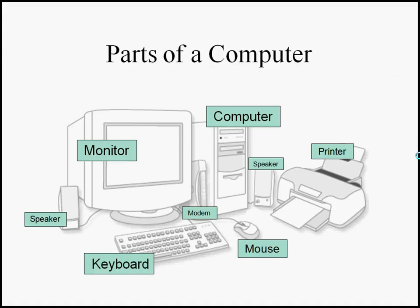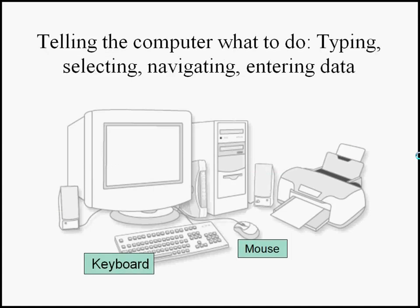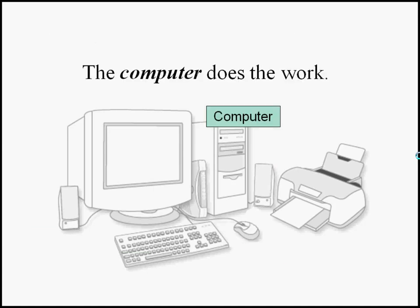These are all the parts put together. You can think of the monitor, speaker, and printer as three different ways to get information out of the computer — by watching, reading, listening, and printing. There are only two ways to immediately get information into the computer: the keyboard and the mouse.